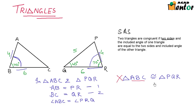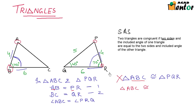If we write triangle ABC on the left-hand side, we need to find the corresponding vertices of the other triangle. A corresponds with P because AB equals PR. At vertex B, angle ABC equals angle PRQ, so B corresponds with R, and C corresponds with Q. Therefore, on the right-hand side you write PRQ and not PQR. So triangle ABC is congruent to triangle PRQ — that is the correct way.